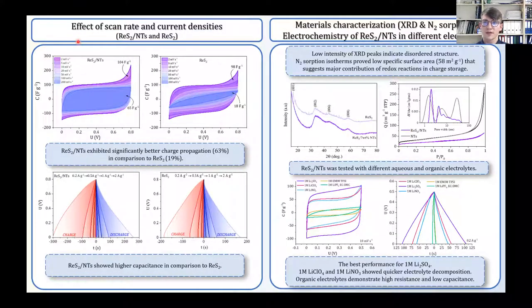Later we have decided to compare the effect of scan rate and application of different current densities for the composite material and for the raw materials. And as you can see, not only the capacitance was improved, but also the ReS2 deposited on the nanotubes exhibited significantly better charge propagation by about 40%.